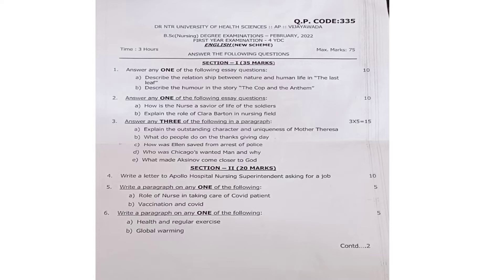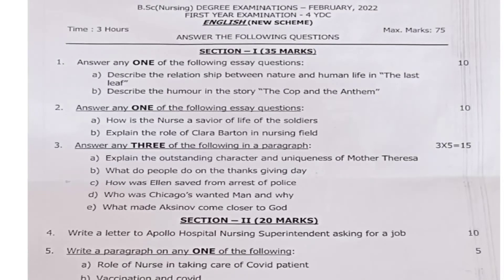Let's see what questions they have asked in this February 2022 English question paper. This paper has Section 1, Section 2, and Section 3. Section 1 is for 35 marks and has three questions. Question 1 — answer any one: 1a: Describe the relationship between nature and human life in 'The Last Leaf.' 1b: Describe the humor in the story 'The Cop and the Anthem.'